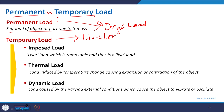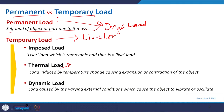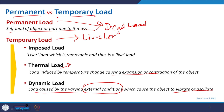In temporary load there are three ways of defining it. First is imposed load — the user-defined load, including human beings, furniture, and machinery. Second is thermal load — related to heat and the load applied to a structural component due to change in temperature. Third is dynamic load — load caused by varying external conditions, which may be due to rain, flood, snow, wind, or earthquake — all the oscillations and vibrations that create load fall under dynamic load.